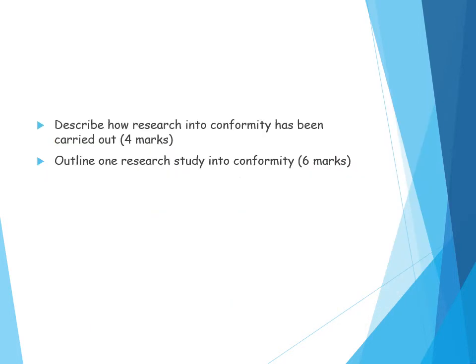You could get asked: 'Describe how research into conformity has been carried out' — that's a four-mark question and it is purely asking you for the procedure, so don't include findings or conclusions. You'd say that 123 American students took part, they were asked to judge a reference line and say which of the three lines best represented it. There were confederates seated around the table who would give the incorrect answer. Participants had to say out loud publicly which they thought was the correct line. 12 out of the 18 trials were critical trials where the confederates would give the wrong answer.